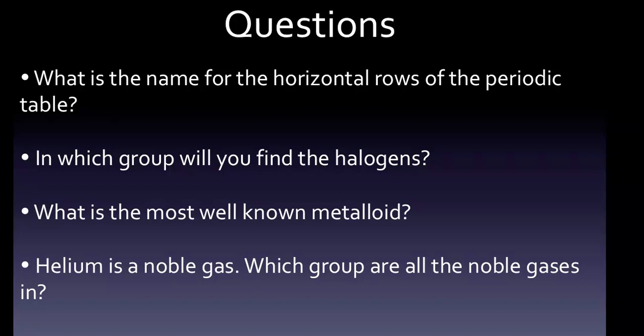A few questions here, and we'll ask these same questions again at the end. What is the name for the horizontal rows of the periodic table? In which group will you find the halogens? What is the most well-known metalloid? Helium is a noble gas—which group are all the noble gases in?